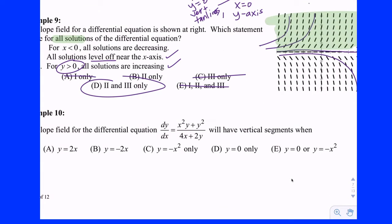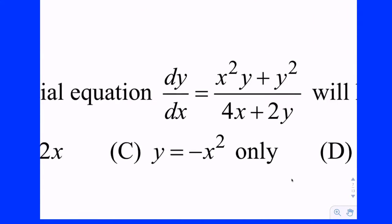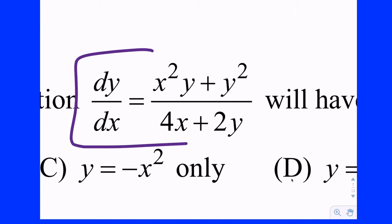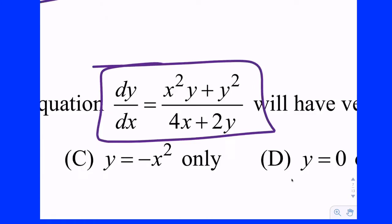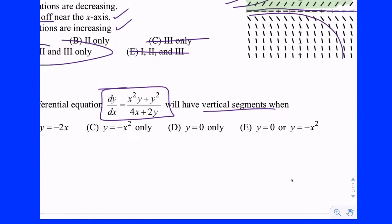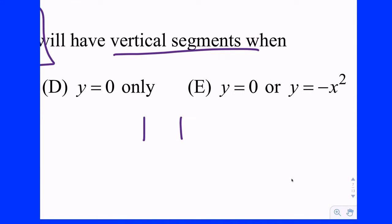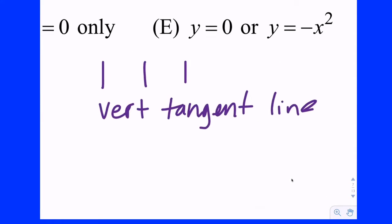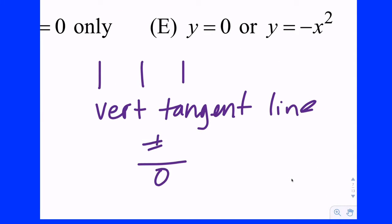Example 10 — another multiple choice question. The slope field for this differential equation — which has a lot of x's and y's — is not given as a graph. It's going to have vertical segments when there are vertical tangent lines. What causes a vertical tangent line? Zero in the denominator and a non-zero in the numerator. Zero over zero you throw out, but non-zero over zero is a vertical tangent line — some type of infinity.